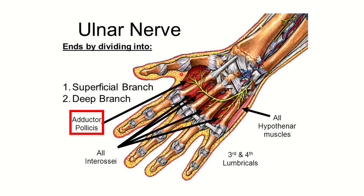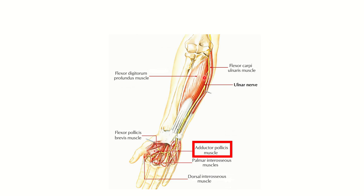This nerve travels and goes to the adductor pollicis, supplying the adductor pollicis muscle, which is responsible for adduction of the thumb. Since adduction of the thumb is lost, the nerve supplying the adductor muscle is injured. We can see this muscle is the adductor pollicis — it causes adduction of the thumb — and the injury occurs at the base of the fifth finger region.